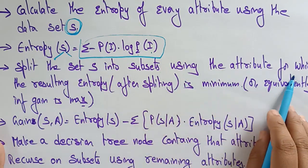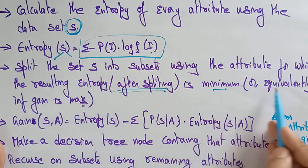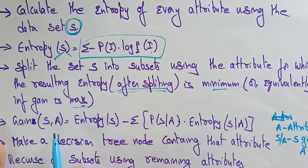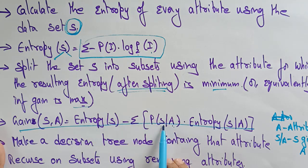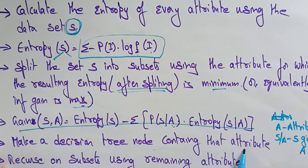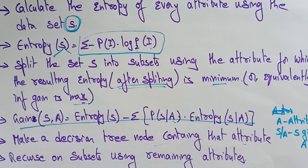Equivalently, the information gain is maximum. The formula for gain is: Gain(S, A) = Entropy(S) − Σ (|Sv|/|S|) · Entropy(Sv), where A is the attribute. Make a decision tree node containing that attribute and recurse on the subsets using the remaining attributes. I'll implement this algorithm on an example so you'll understand what decision tree learning is. Thank you.